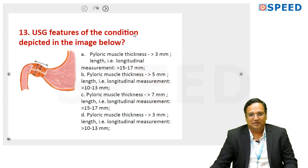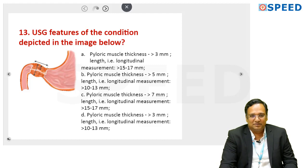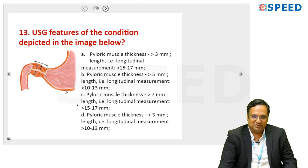Now the question reads: ultrasound features of the condition depicted in the image below. Whenever you look into the question, it gives you an idea that this is something to do with the pyloric sphincter. When you read these numbers, it is all related to congenital hypertrophic pyloric stenosis.